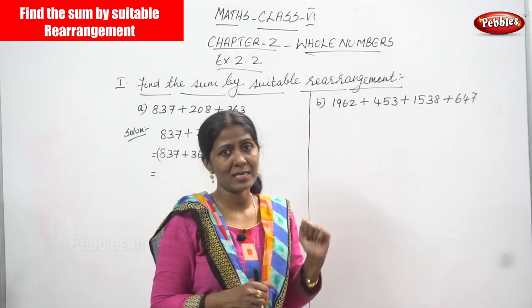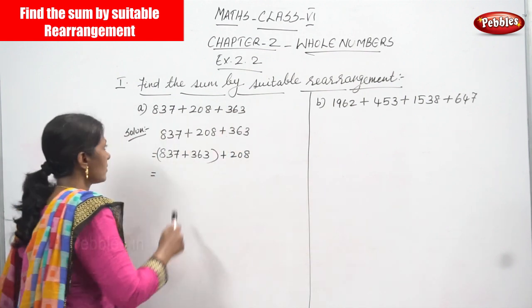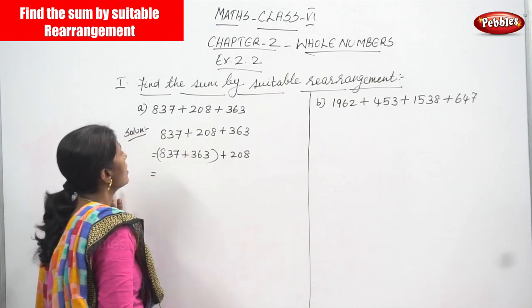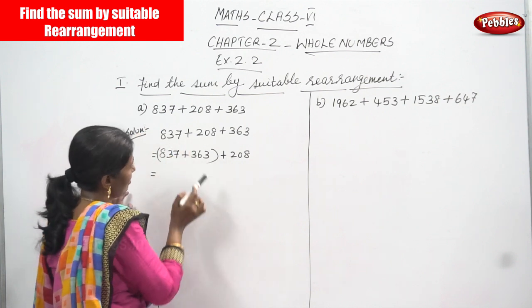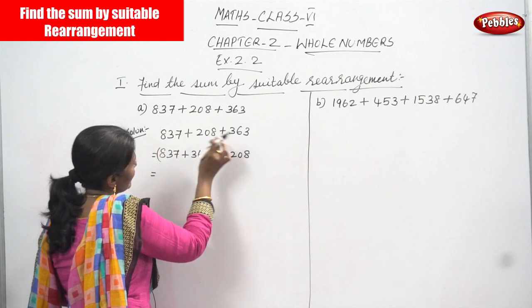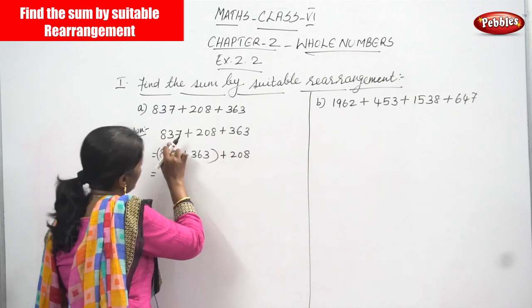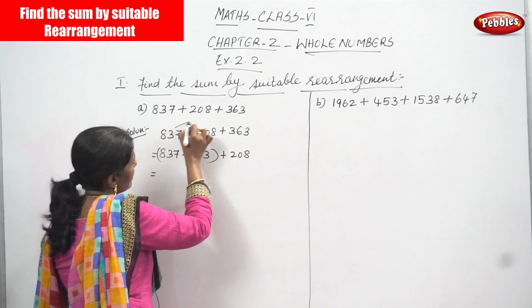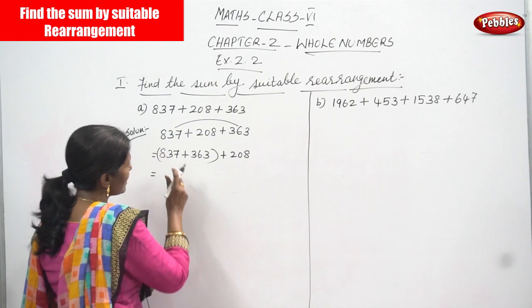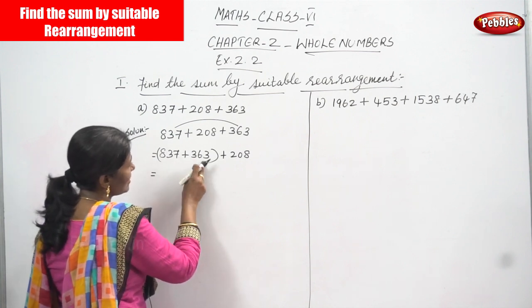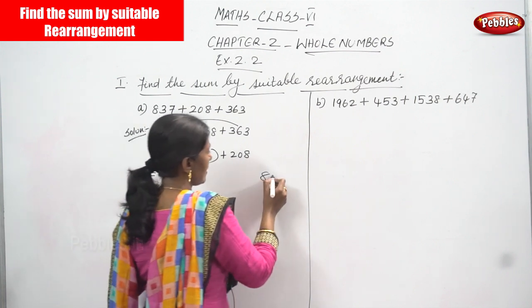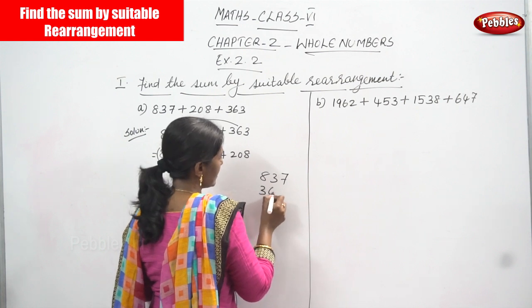Now we are going to start the sum. First question: 837 plus 208 plus 363. First number is 837, second number is 208, and third number is 363. So first and third number you are going to add — because 837 plus 363, the last digits end conveniently.